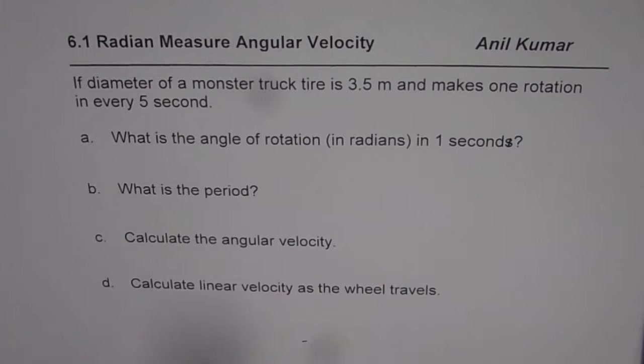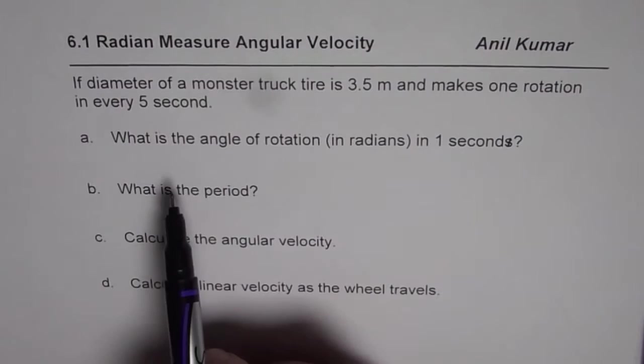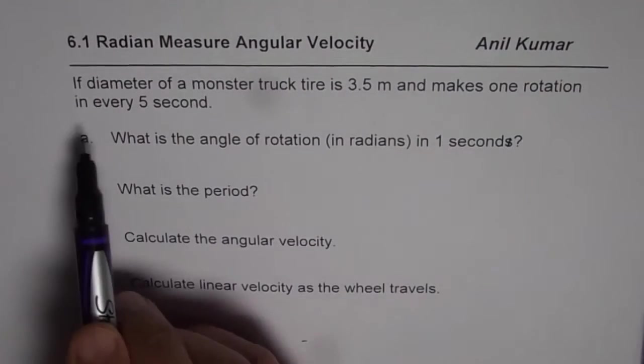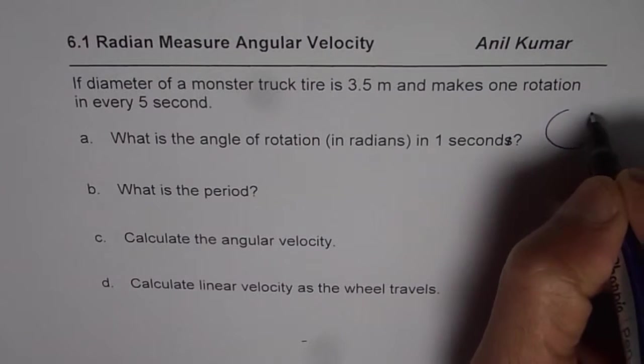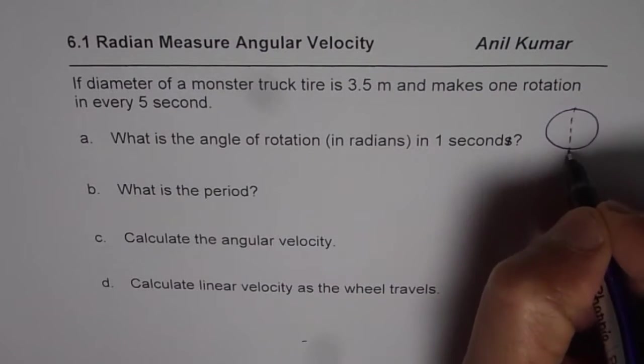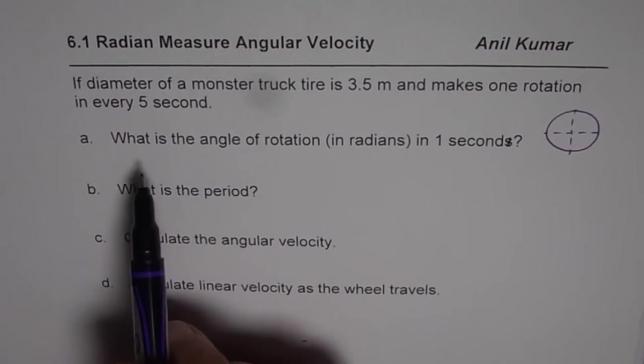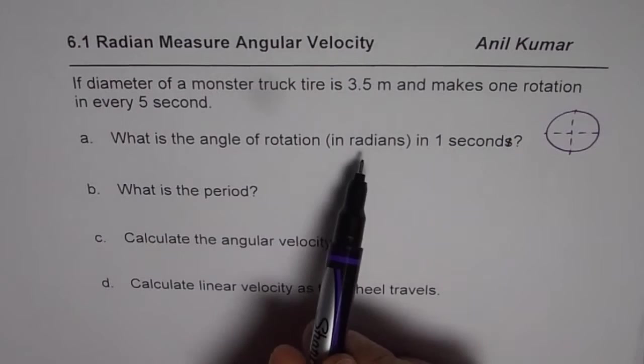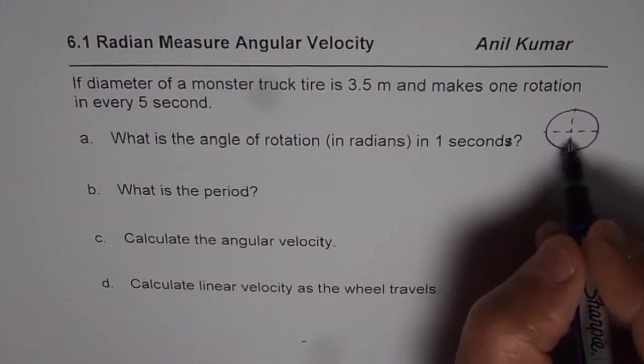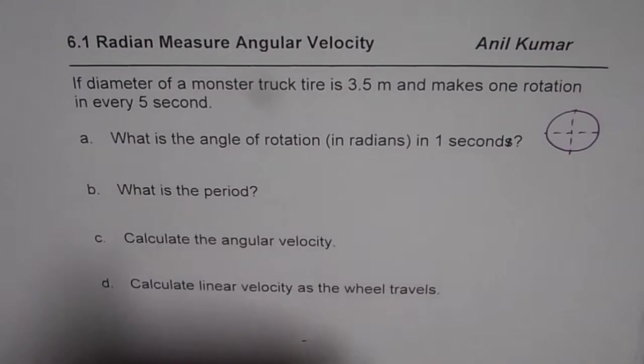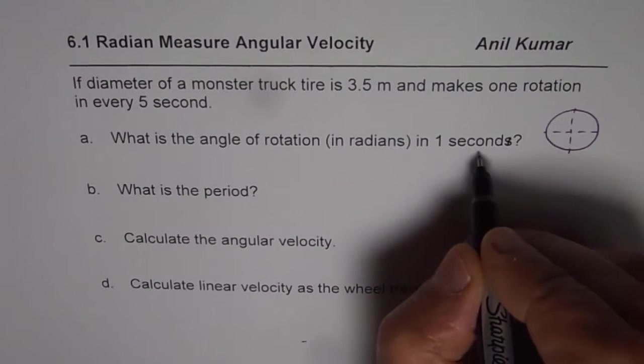What we have here is that the diameter of the truck tire is 3.5 and it makes one rotation in five seconds. So it goes through one full circle in five seconds. Part A is, what is the angle of rotation in radians in one second? Now, since it makes one full circle in five seconds, in one second, the angle should be one fifth.